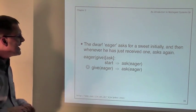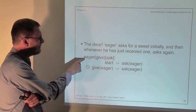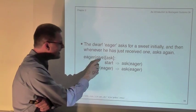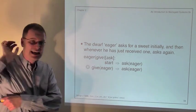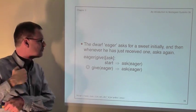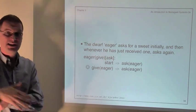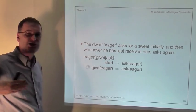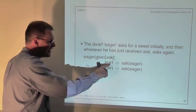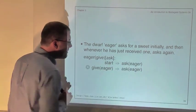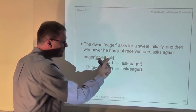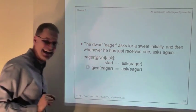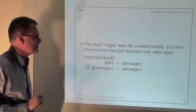We can put Snow White together with other agents. The Eager agent listens for give messages and sends ask messages. His first rule fires immediately when he starts executing — he makes 'ask Eager' true in his beliefs, which matches his outgoing messages, so it gets broadcast to all other agents. His second rule says: if ever Eager is given a sweet, he immediately asks again.